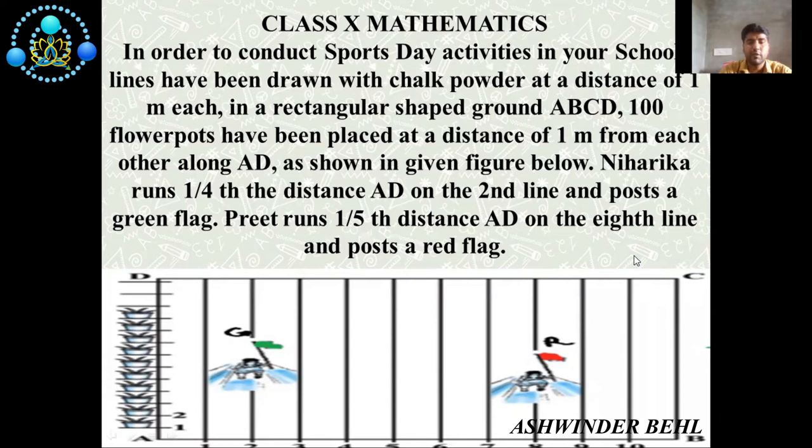Hello friends, today we will discuss a new case study based on class 10 chapter coordinate geometry. In order to conduct sports day activities in your school, lines have been drawn with chalk powder at a distance of one meter each in a rectangular shaped ground ABCD. 100 flower pots have been placed at a distance of one meter from each other along AD. As shown in the given figure below, Niharika runs one fourth the distance AD on the second line and posts a green flag. Preet runs one fifth the distance AD on the eighth line and posts a red flag. Based on this picture, there are some questions. Now we will solve these questions.